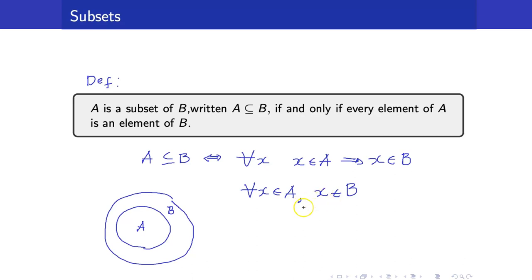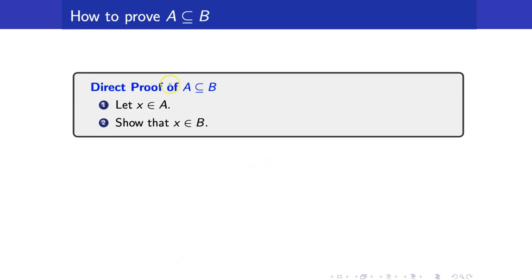Now let us discuss how to prove that a set is a subset of another set. From our definition, A ⊆ B means for all x in A, x must be in B. So we start our proof by saying: let x be an arbitrary element of A, then show that x must also be in B. When showing that a set is a subset of another, you get an arbitrary element of the first set and show it is contained in the second set.